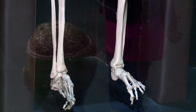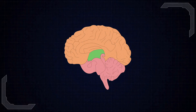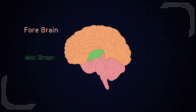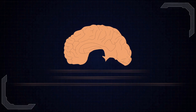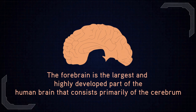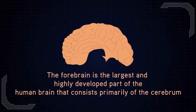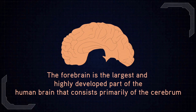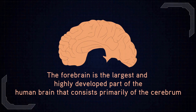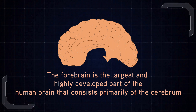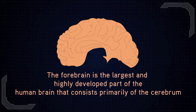The brain can be divided into three basic units: the forebrain, the midbrain, and the hindbrain. The forebrain is the largest and most highly developed part of the human brain, and it consists primarily of the cerebrum.